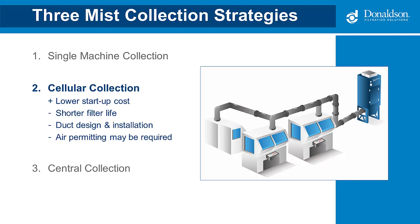The cellular mist collection strategy typically consists of three to five machine centers served by a single mist collector. Often these machines perform sequential work on the same part and all use the same coolant system. Advantages include easier maintenance during manufacturing cell downtime, lower capital equipment costs for one mist collector handling multiple machines, and lower energy consumption. Disadvantages include no flexibility if your process changes or equipment needs to move, ductwork that can leak causing slip hazards, risk of insufficient airflow or material settling in ductwork if not designed properly, and with larger air volumes you may require an air permit.